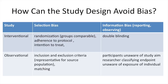What does bias have to do with study design? We can avoid bias by doing a good study design in an interventional trial. To avoid selection bias, we do randomization so the groups are comparable, adhere to the protocol, and do an intention-to-treat analysis so the follow-up is similar. We can prevent information bias by blinding both participants and researchers. In observational studies, we should do a good selection of patients with inclusion-exclusion criteria so they're representative of the source population, and we can do matching to make two groups very similar. We can also try to make participants unaware of the study aim and make researchers classifying endpoints unaware of individual exposures.